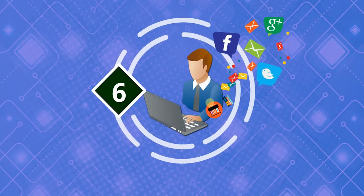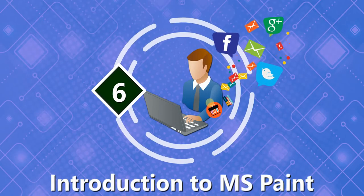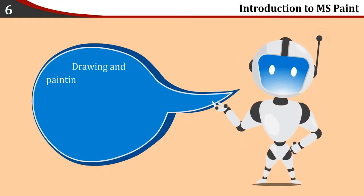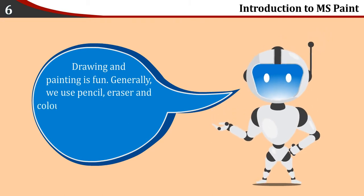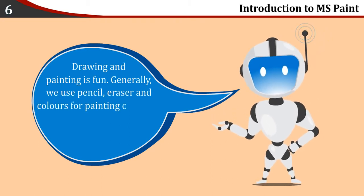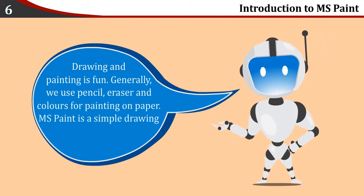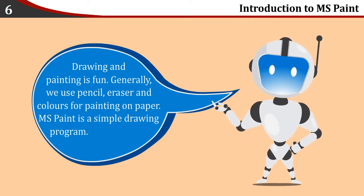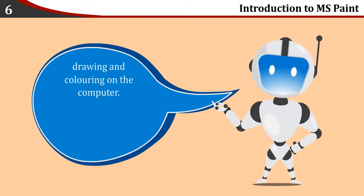Chapter 6: Introduction to MS Paint. Drawing and painting is fun. Generally, we use pencil, eraser and colors for painting on paper. MS Paint is a simple drawing program. It provides us different tools for drawing and coloring on the computer.